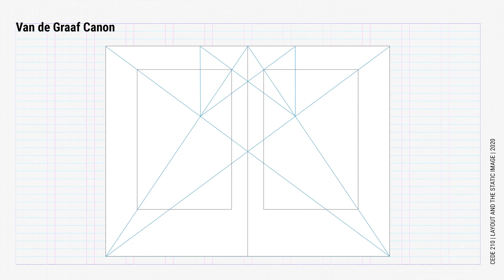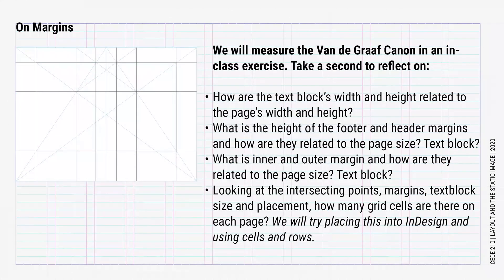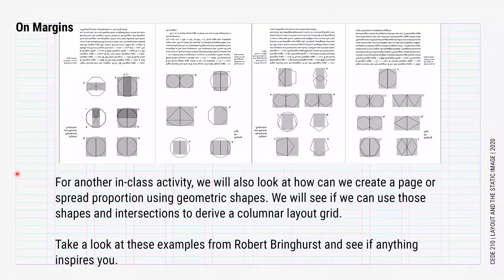We will measure the Van de Graaff Canon in an in-class exercise. Take a second to reflect on how the text block's width and height are related to the page's width and height. What is the height of the footer and header margins, and how are they related to the page size and text block? What is the inner and outer margin, and how are they related to the page size as well as the text block? Looking at the intersecting points, margins, text block size and placement, how many grid cells are there on each page? We will try to place this into InDesign using create guides to figure it out. For another in-class activity, we'll also look at how we can create a page or spread proportion using geometric shapes, and see if we can use those shapes and intersections to derive a columnar layout grid. Take a look at these examples from Robert Bringhurst and see if anything inspires you.